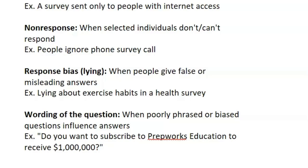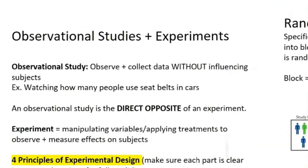Next up is wording on the question. If you poorly phrase the question or it's a biased question, it influences the answers. For example, asking 'Do you want to subscribe to Preparix Education?' is a fair question, but adding 'to receive $1 million' at the end is a bribe — the wording is poorly phrased, it's biased, and it influences your answer.